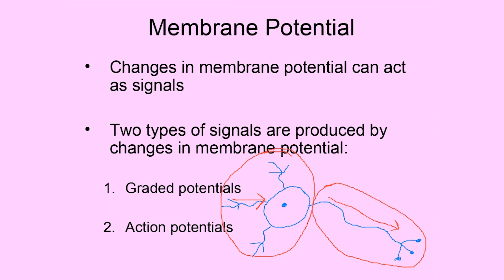What causes a graded potential, and how a graded potential can be used to initiate an action potential — it's the action potentials that travel down the axon, away from the nerve cell, that allow neurons to communicate with other cells of the body: skeletal muscle cells, organs, glands, and those kinds of things.